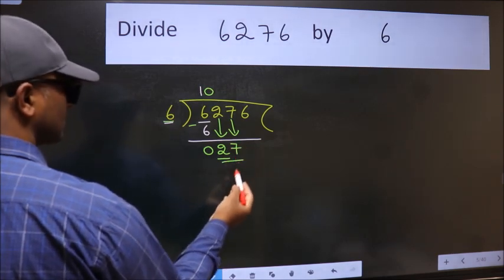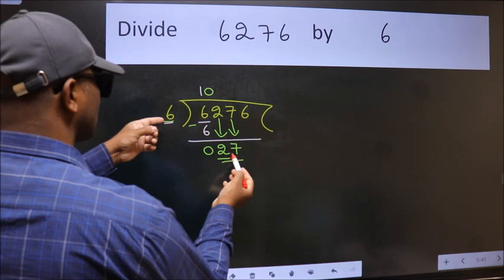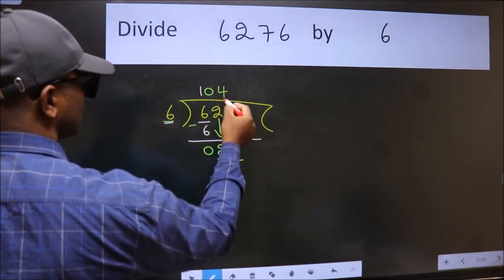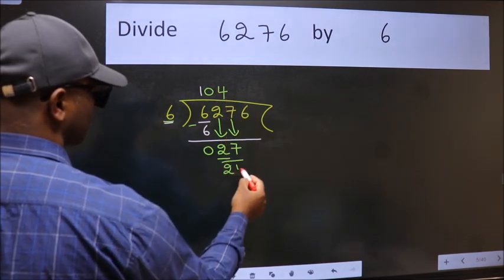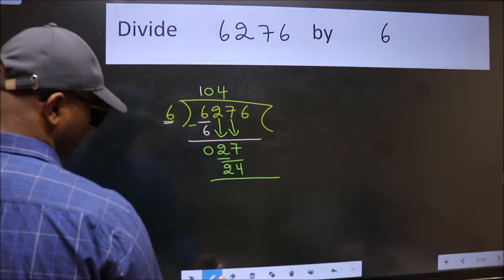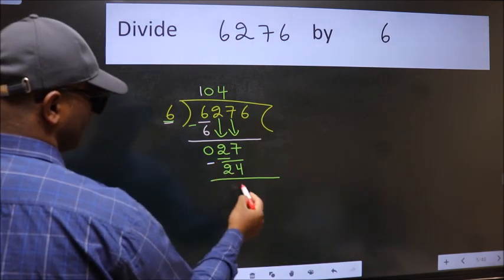So 27. A number close to 27 in 6 table is 6 fours 24. Now we subtract. We get 3.